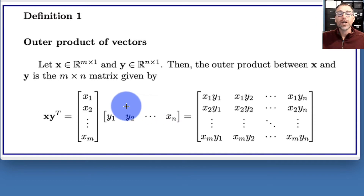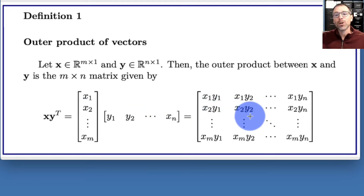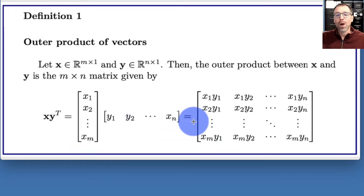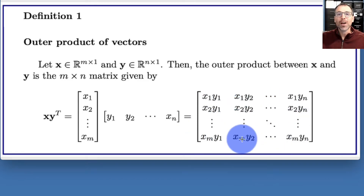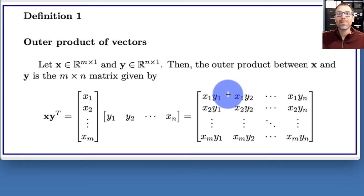That's the column version. We could also do the row version, where we take the first entry of x multiplied by the entire y-transpose vector and put that in the first row of the output, the second entry of x multiplied by y-transpose in the second row, all the way down to the last entry of x multiplied by y-transpose in the last row. One thing to notice is that each column is just a scalar multiple of the previous columns, and each row is a scalar multiple of the previous rows — that follows directly from the definition.